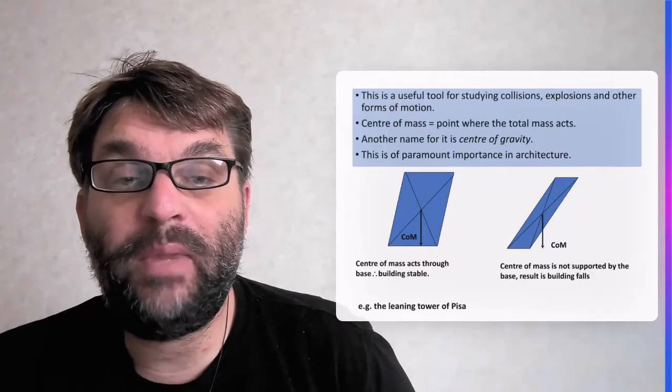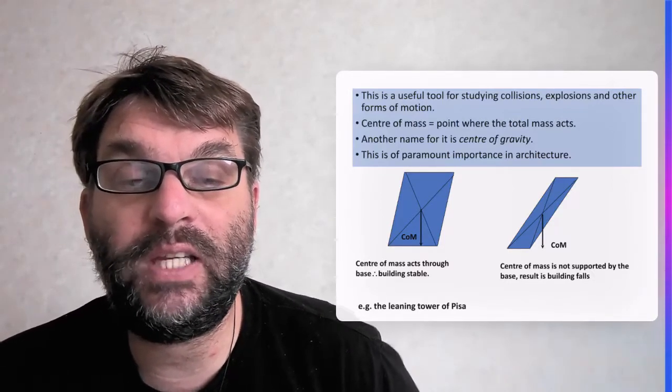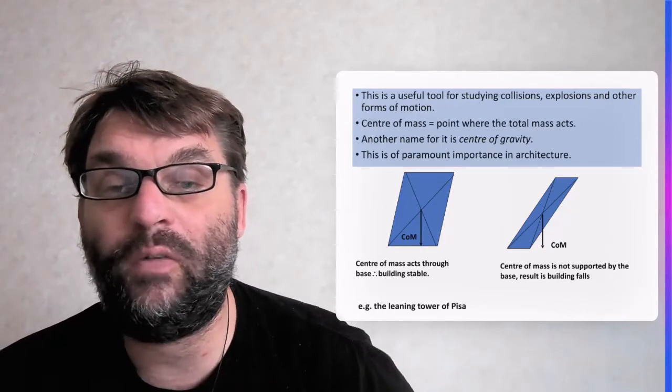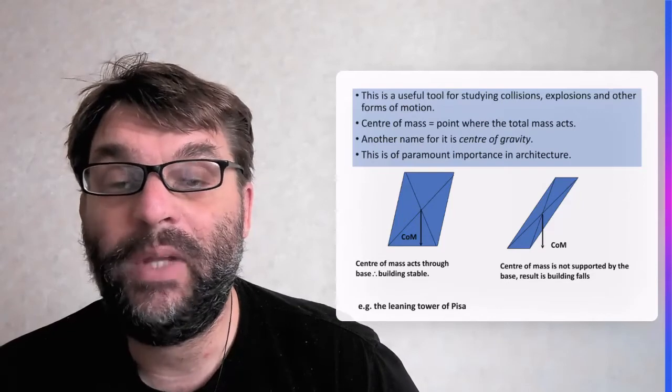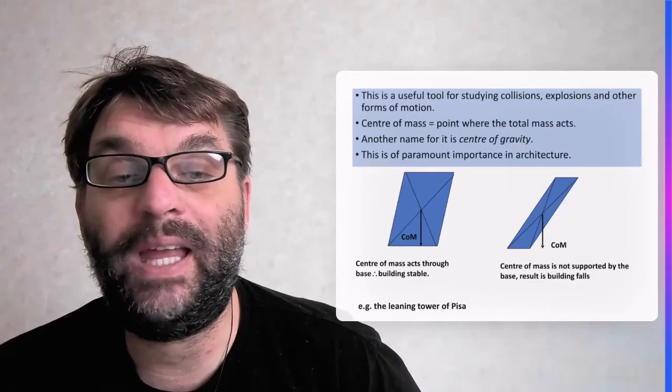You can see in the diagram there that if the Centre of Mass acts through the base of an object then the building is stable, and if it doesn't then it's going to fall over and collapse.